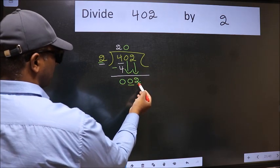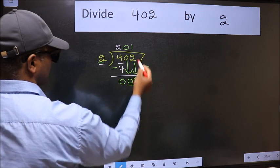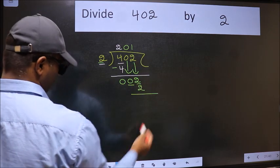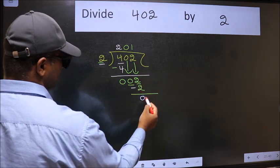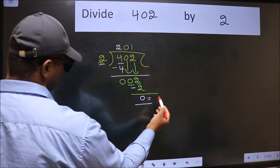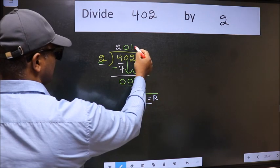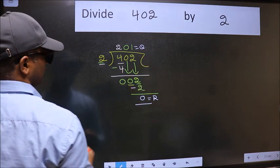Now 2. When do we get 2 in the 2 table? 2 times 1 is 2. Now we should subtract. We get 0. So this is our remainder and this is our quotient.